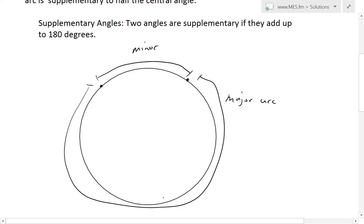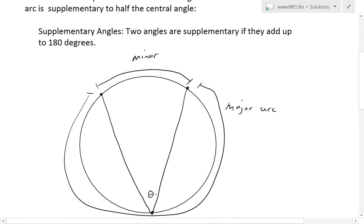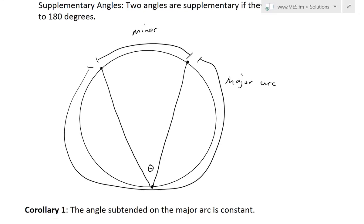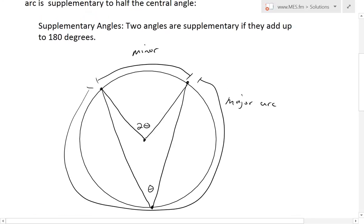So if we subtend — make an angle — inscribe an angle subtended by these two points, we form an angle theta. This theorem states that this angle theta is half of the central angle which subtends on the same arc. So if the center of the circle is here and we subtend from the same arc, this is going to be two theta, because theta is half of the central angle.